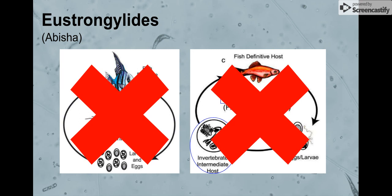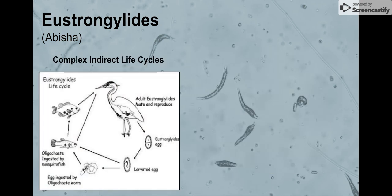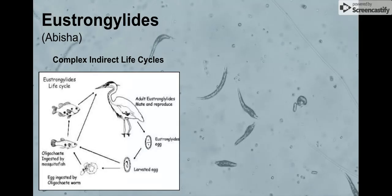Eustronglides have a complex indirect life cycle. This means there can be a variety of intermediate hosts, but in our case, since we're focusing on freshwater fish, the final host is generally a bird.